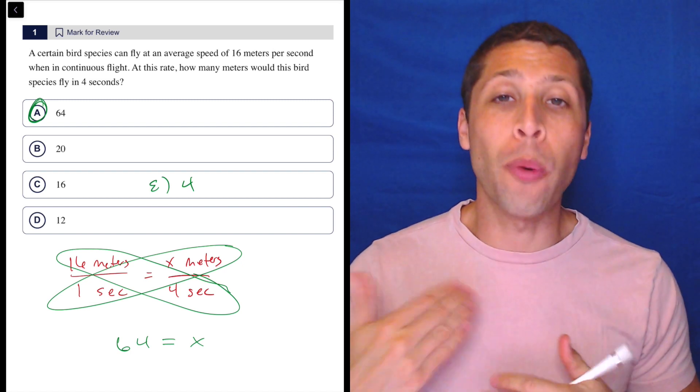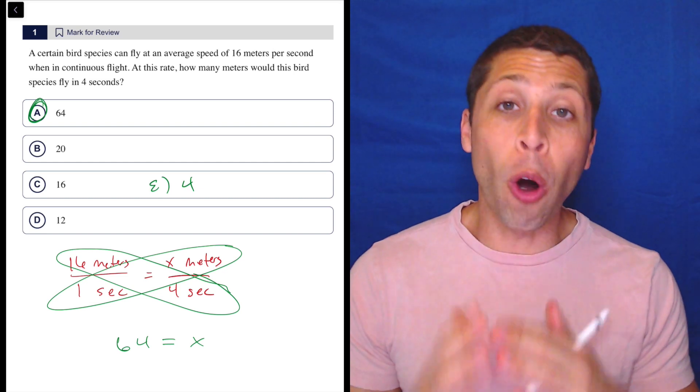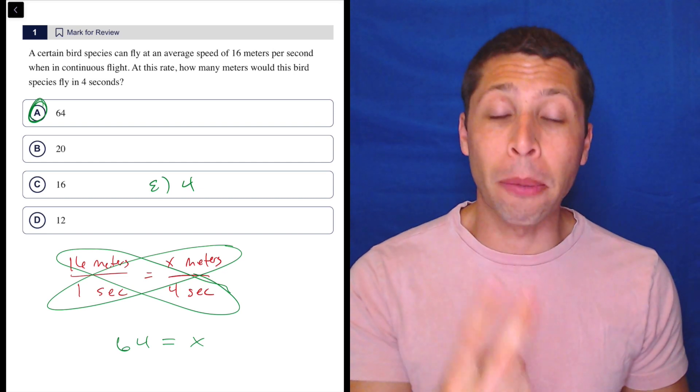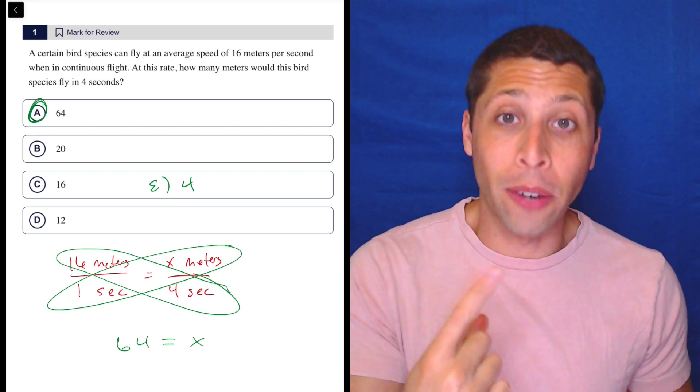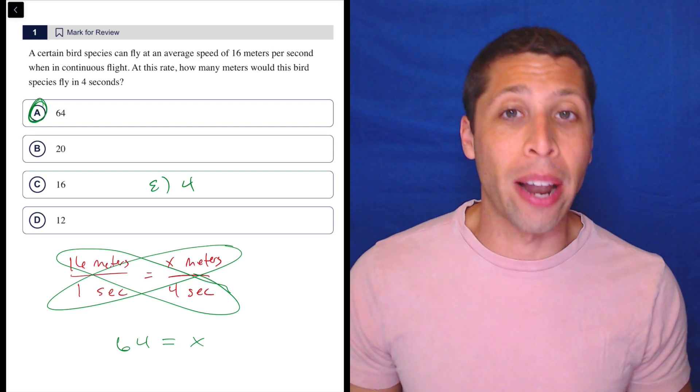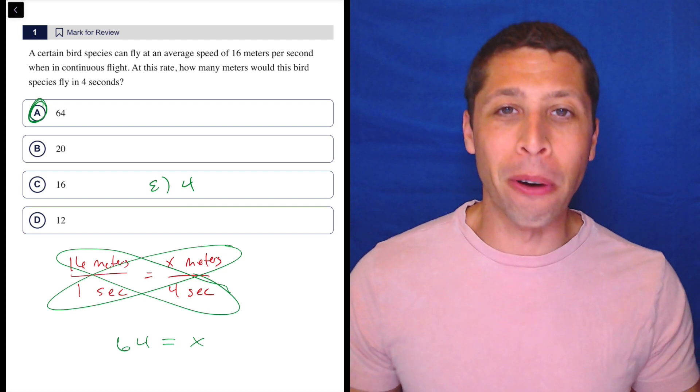Just remember that when you are given a rate - something like miles per hour, meters per second, whatever it is - you can always turn that into a fraction of two numbers, because the bottom number, per second or per hour, that's one. You can always do that to make sure this setup is consistent. Hopefully that was a very thorough review of a very simple concept.